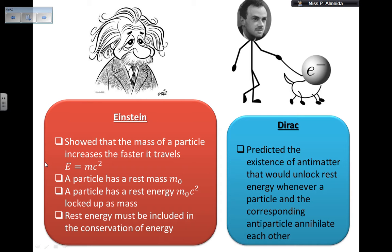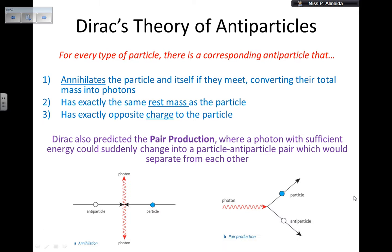Einstein also said that the rest energy must be included in conservation of energy, so when we look at these decays and emissions we need to include it in calculations. Dirac predicted the existence of antimatter and said it would unlock the rest energy whenever a particle and its corresponding antiparticle meet and annihilate.